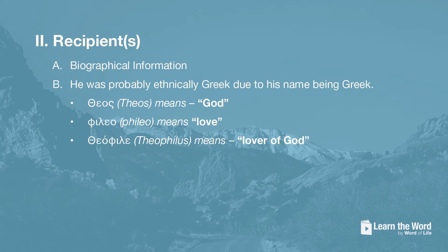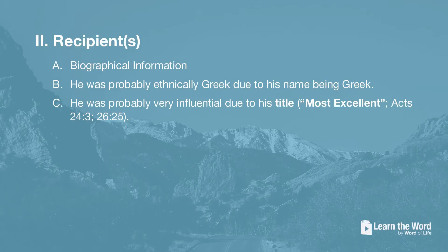We do not know a lot about this man Theophilus. However, Luke calls him 'most excellent Theophilus.' We can deduce a few things from this. First, Theophilus is probably Greek in ethnicity because his name is Greek in origin — it comes from two words: 'theos,' meaning God, and 'phileo,' meaning love. So the compound name Theophilus means 'lover of God.' However, this does not necessarily mean he was a Christian, as it may be a reference to love of Greek or Roman gods. Theophilus was probably a very influential person, perhaps a Roman ruler, which we deduce from the title Luke uses: 'most excellent.'